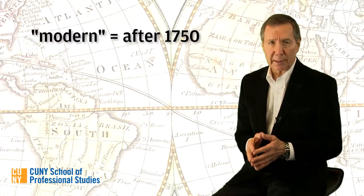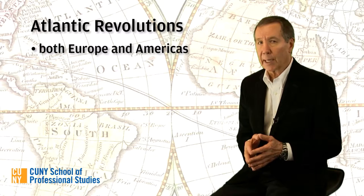Up until now, we've been talking about what we might call pre-modern societies. The word modern, as used by historians, is usually applied to events beginning after 1750. We'll use it to describe the Atlantic Revolutions — profound political changes that emerged on both sides of the Atlantic Ocean between the end of the 18th and the middle of the 19th century.